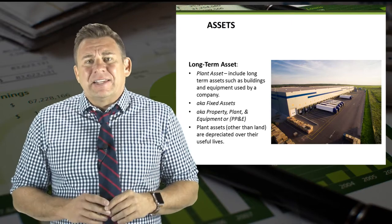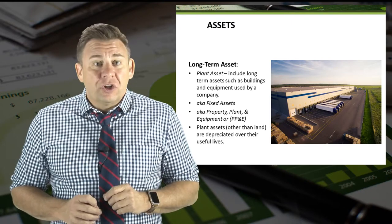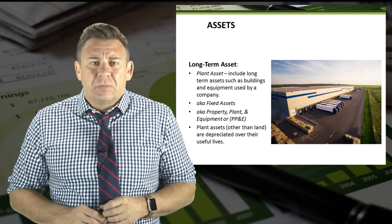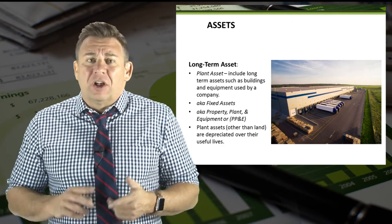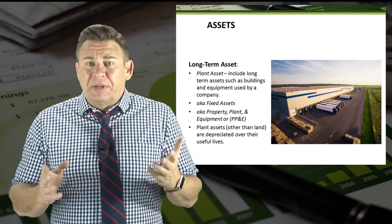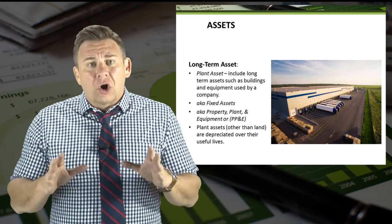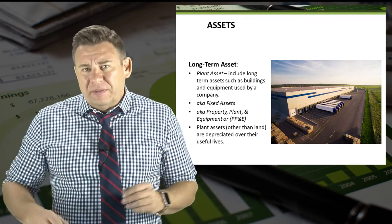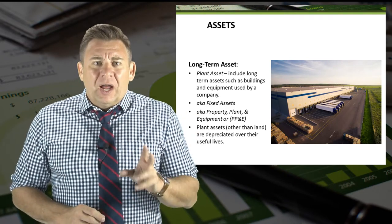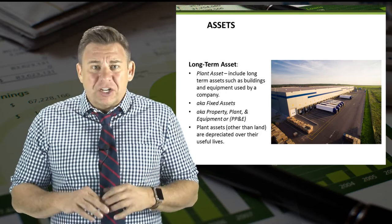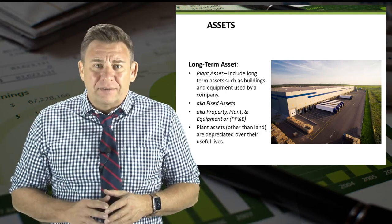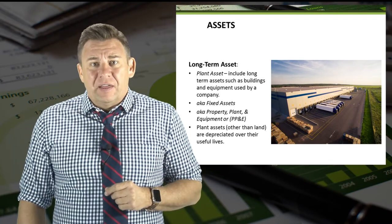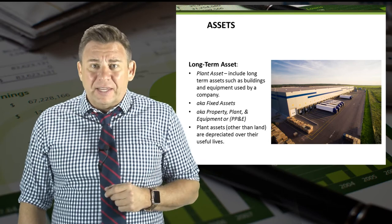The final asset is plant assets, which includes long-term assets such as buildings and equipment used by a company. Plant assets are sometimes called fixed assets, sometimes called property, plant, and equipment, or PP&E for short. These terms all mean the same thing. Unlike current assets, plant assets are depreciated over their useful lives. We will learn all about how to do that and many other things in this module covering key assets.